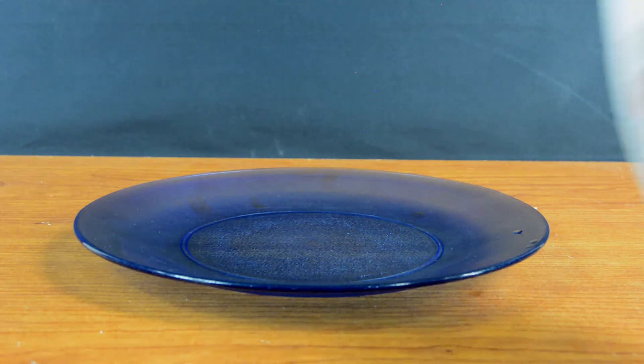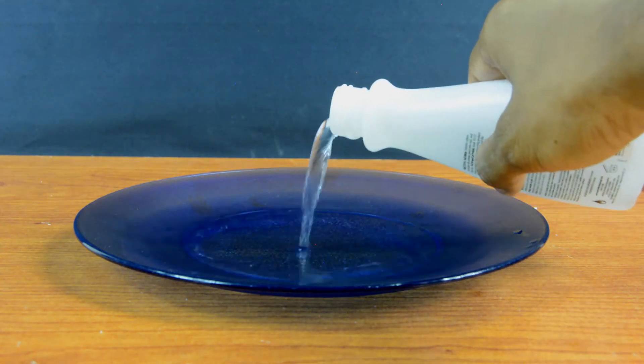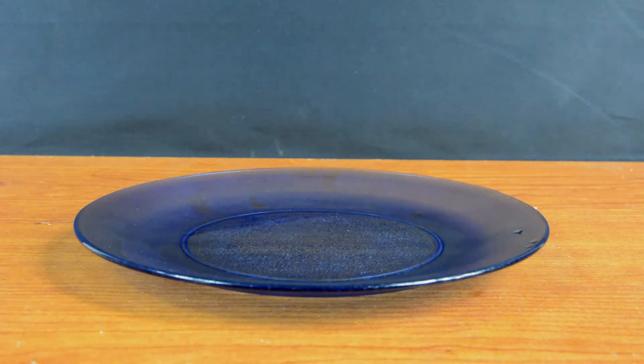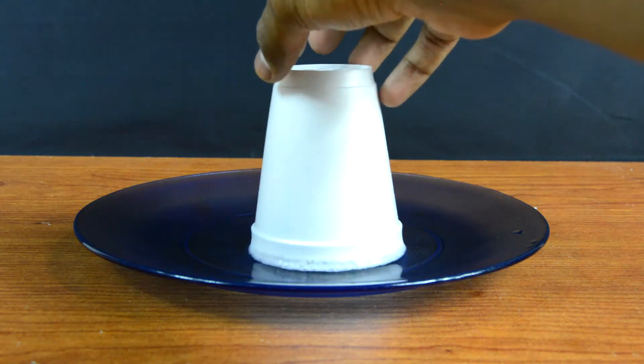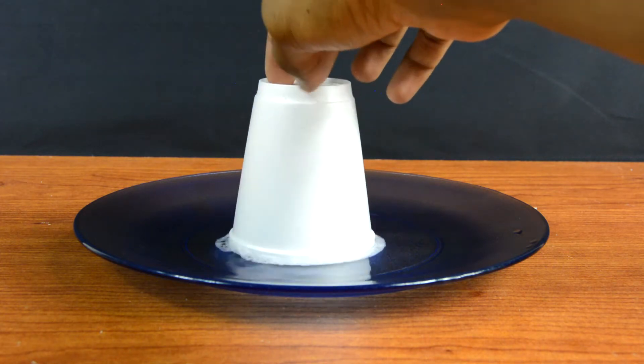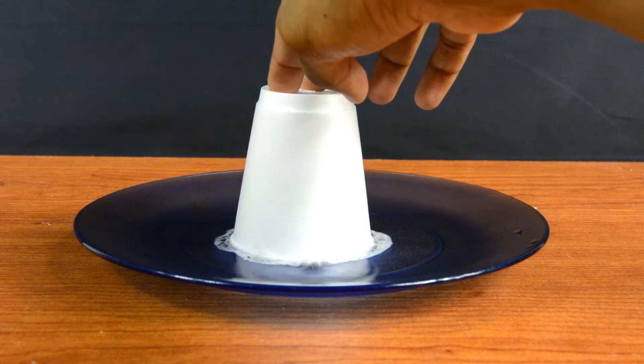To start off, get yourself a plate and pour a little bit of nail polish remover in it. Then drop in your styrofoam cup and that's pretty much it. Just watch and enjoy what happens. It's pretty sick, it just starts dissolving and disappearing.